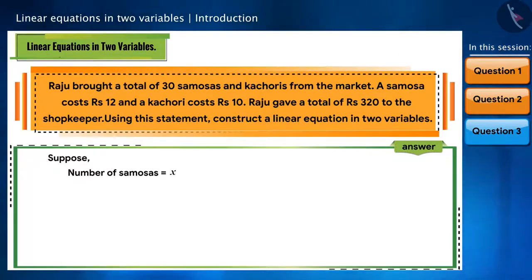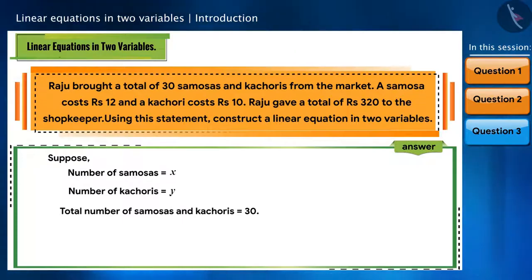Suppose the number of samosas taken by Raju is x and the number of kachoris is y. He has a total of 30 samosas and kachoris, so our equation will be x plus y is equal to 30. How to write it in general form? In this way: x plus y minus 30 is equal to zero.